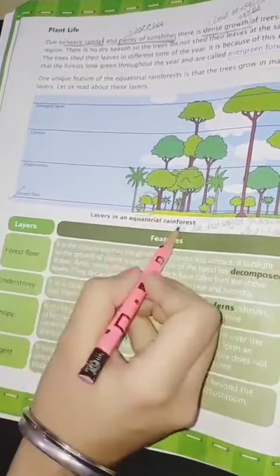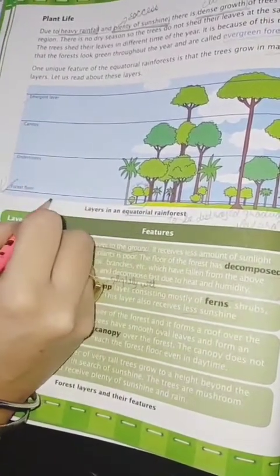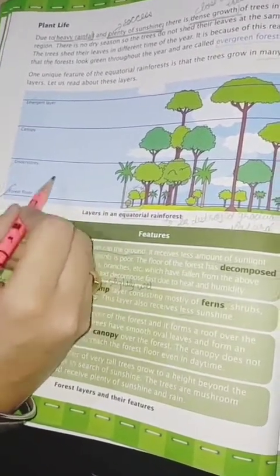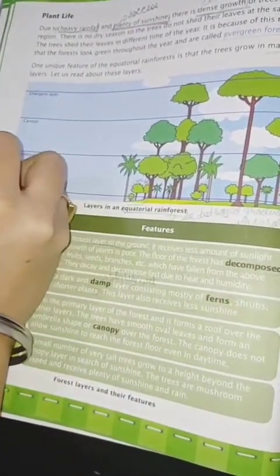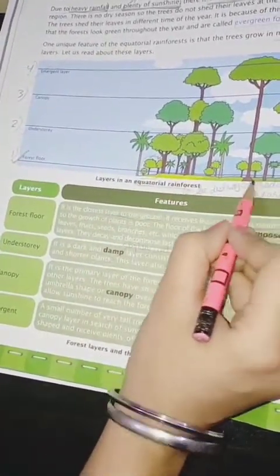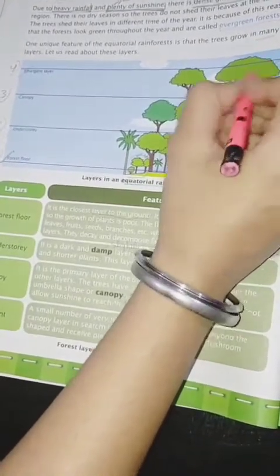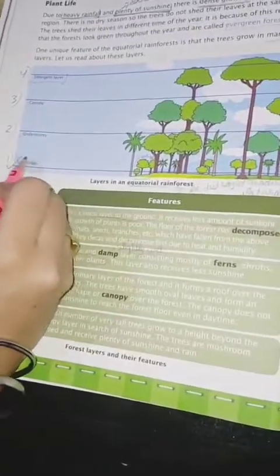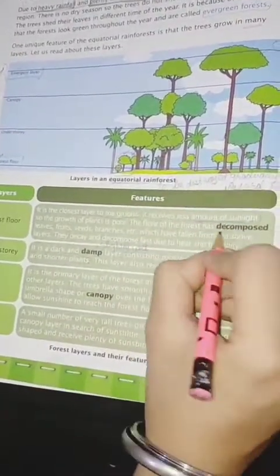Now we are going to discuss the different layers found in the plants of the equatorial rainforest. The first one is the forest floor. Always remember: when we talk about a plant area, we start from the land downward. The forest floor is very close to the ground and receives less sunlight because the canopy blocks it above. The plant matter on the forest floor is mainly decomposed — they gradually shed their leaves as a natural process.